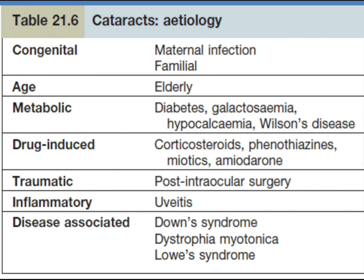Looking at a simpler classification table: congenital causes include maternal infection and familial factors. Age is a factor, being common in the elderly. Metabolic causes include diabetes, galactosemia, hypercalcemia, and Wilson's disease. Drug-induced causes include corticosteroids.